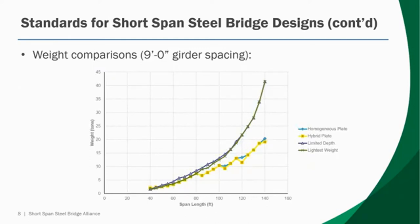In order to ensure that the designs reported by ESPAN were efficient and made sense, we performed a series of weight comparisons looking at different girder spacings. In this graph, the x-axis shows span length and the y-axis shows the weight of girders measured in tons. As would make sense, as the span length increases, the girder weights increase. You'll see a significant divergence between the rolled beam solutions and the plate girder solutions, particularly at a span length of around 100 feet.